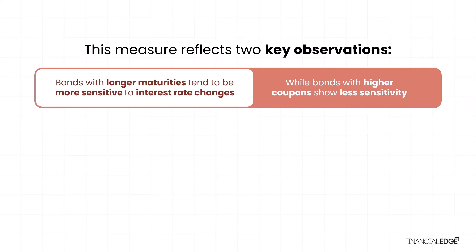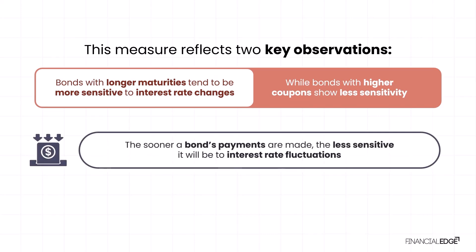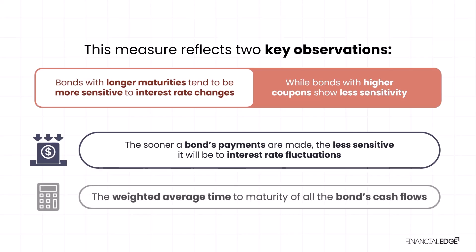By combining these observations, we reach an important insight: the sooner a bond's payments are made on average, the less sensitive it will be to interest rate fluctuations. So to compare two bonds in terms of their interest rate sensitivity, we can calculate the weighted average time to maturity for all the bond's cash flows. And this is exactly what Macaulay duration does.